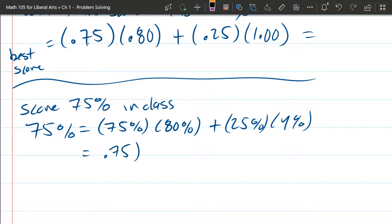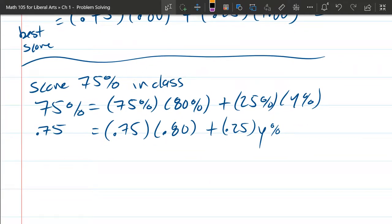0.75, 0.80, plus 0.25 times Y percent. And we have 0.75 here. Okay, so I want to get this out of here to the other side. So we're going to subtract that over.